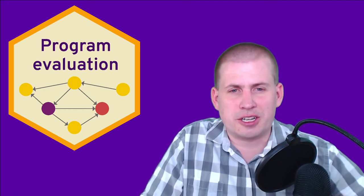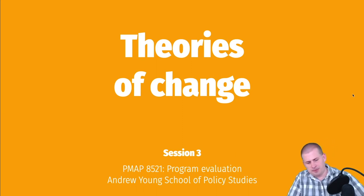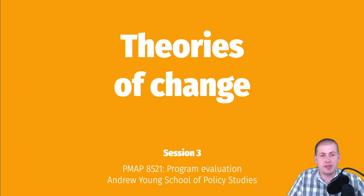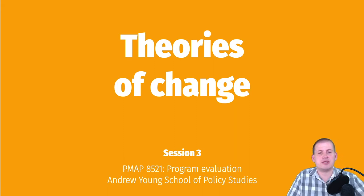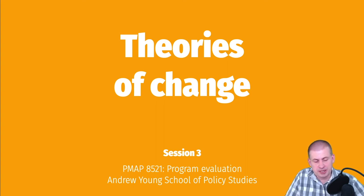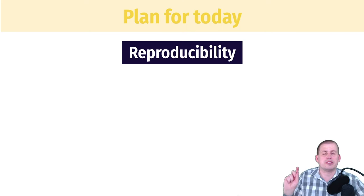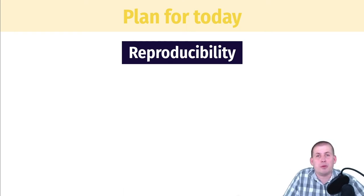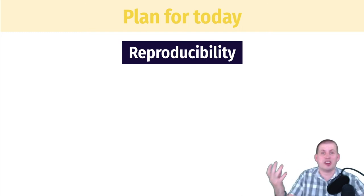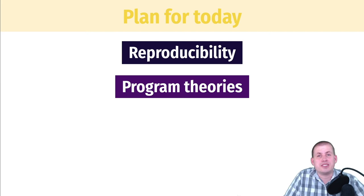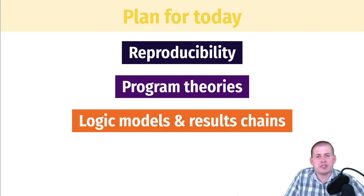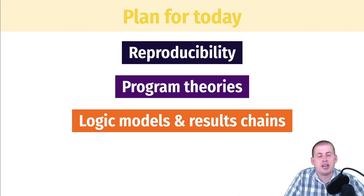The plan for today covers three sections. Let's switch over to the slides. We'll mostly focus on theories of change — how we can see social change through different programs and how we expect to see that change. First, I want to talk briefly about reproducibility in research, which is the justification for why I'm making you learn R and R Markdown this semester. Then we'll talk about program theories and why we invent programs. Finally, we'll cover how to draw out a logic model or results chain, which you saw in your readings from the World Bank evaluation book, and discuss the different parts of logic models and results chains.